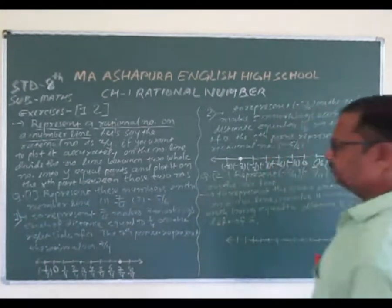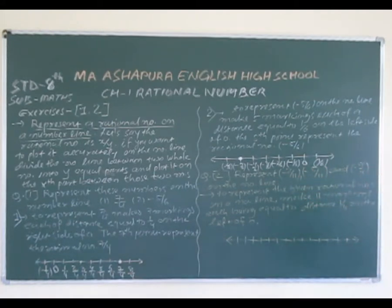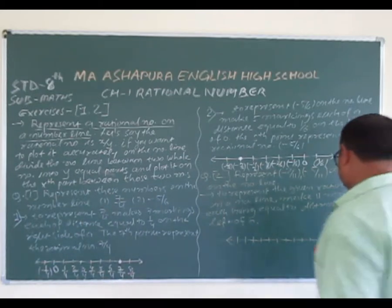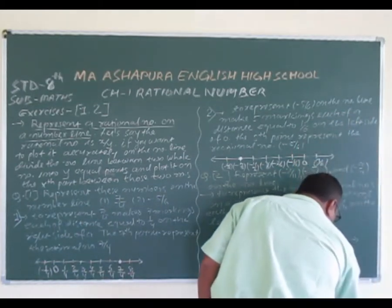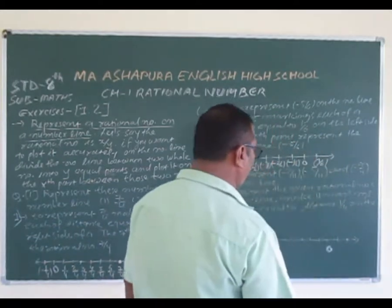So this is a question: represent minus 2 by 11, minus 5 by 11, and minus 9 by 11 on the number line. To represent these rational numbers on a number line, make 11 markings because here the denominator is 11. The numbers are negative, so you have to go to the left side. Now we will start with 11 equal parts.